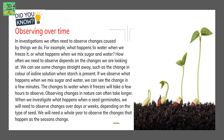Did you know what observing over time means? In investigations, we often need to observe changes caused by things we do. For example, what happens to water when we freeze it, or what happens when we mix sugar and water. How often we need to observe depends on the changes we are looking at. We can see some changes straight away, such as the change in color of iodine solution when starch is present. If we mix sugar and water, we can see the change in a few minutes.